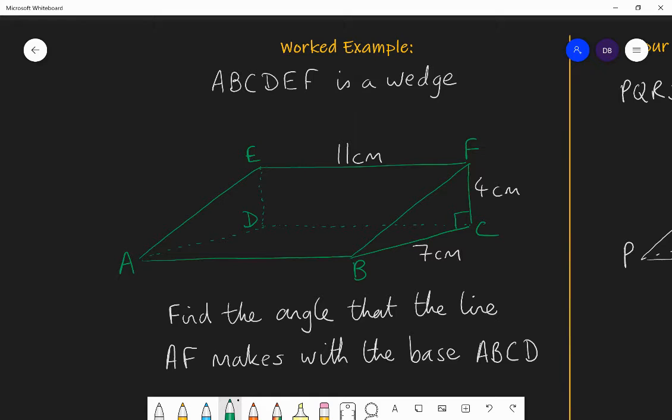The base is 7 centimetres by 11 centimetres, and its height is 4 centimetres, and we have some sort of diagonal rectangle shape ABFE, which is 11 centimetres long, and we would need to use Pythagoras to find the length BF, which was the other side of that shape.